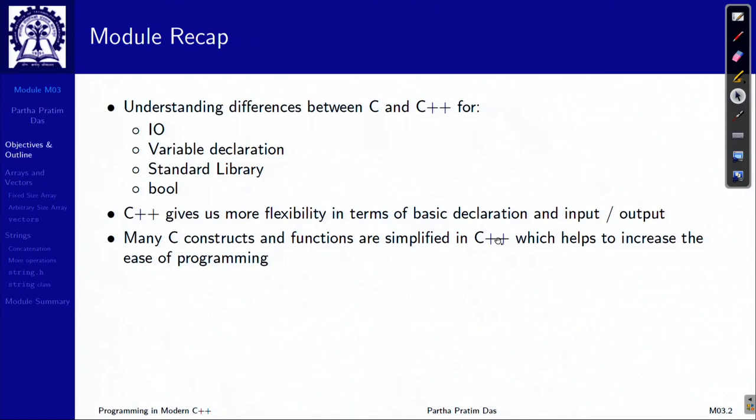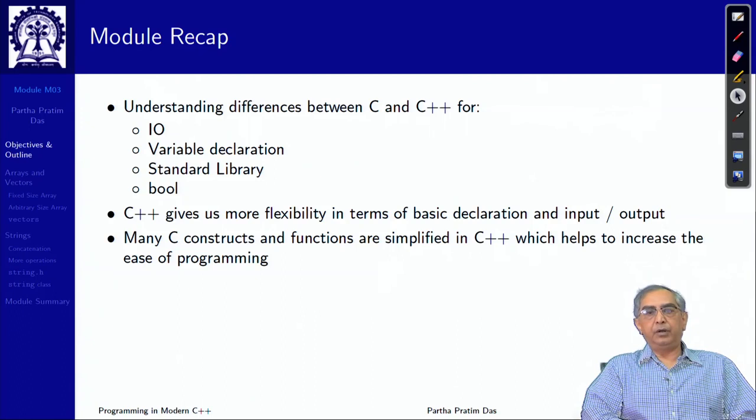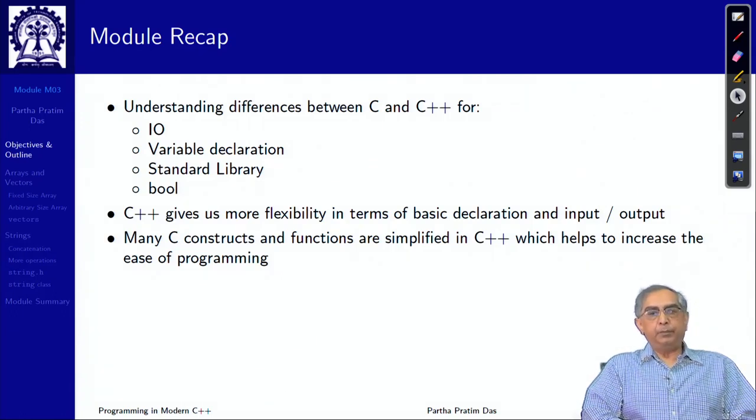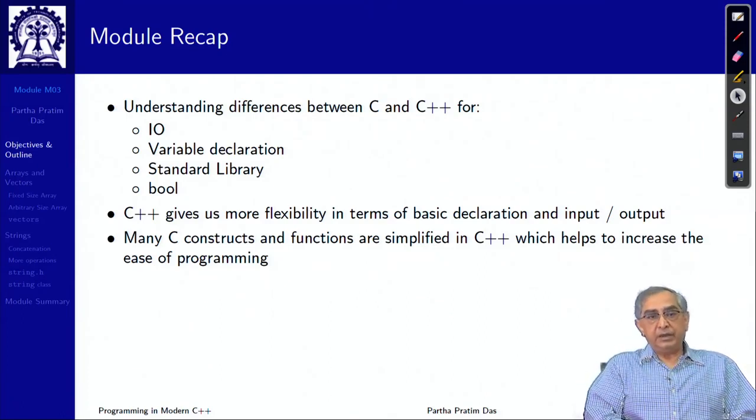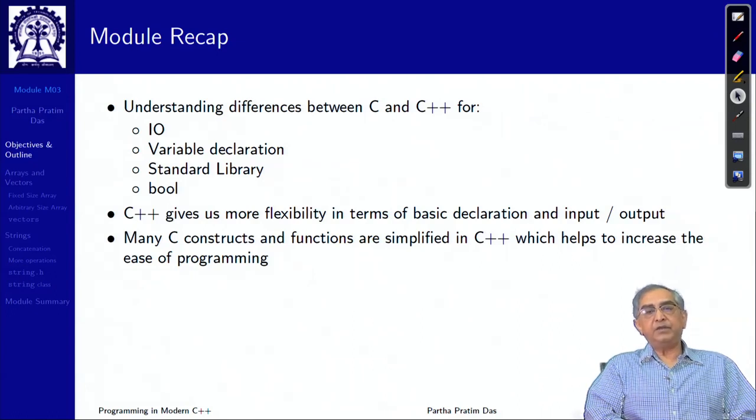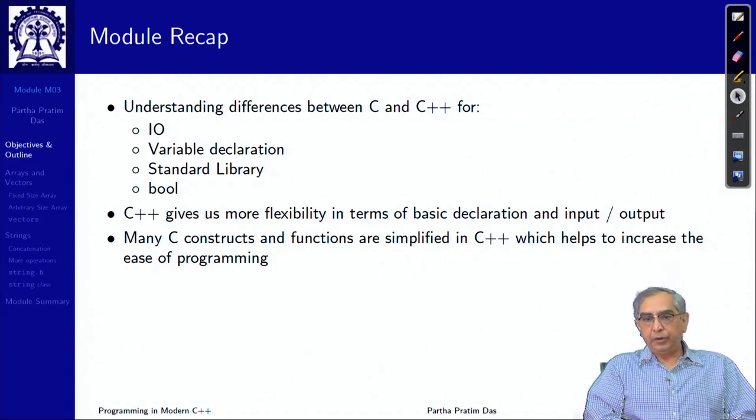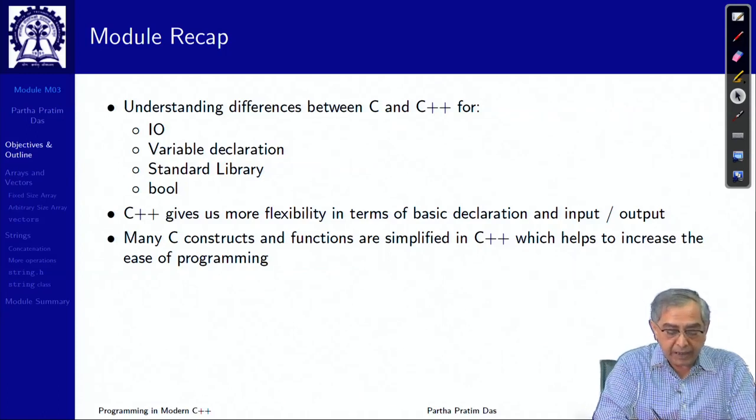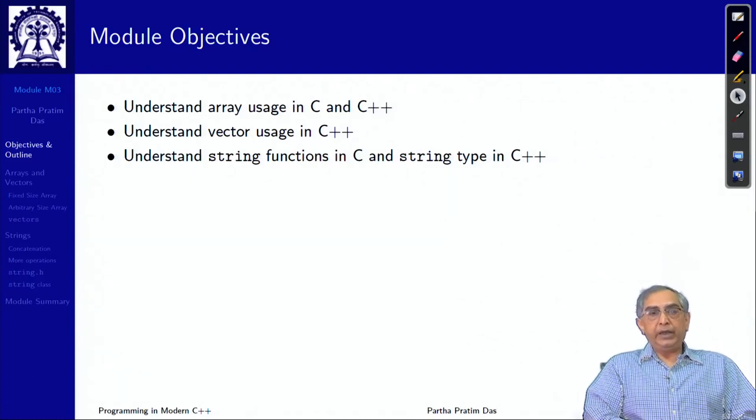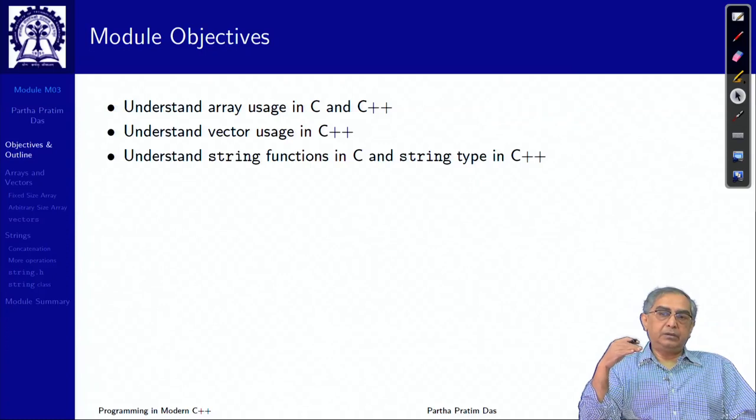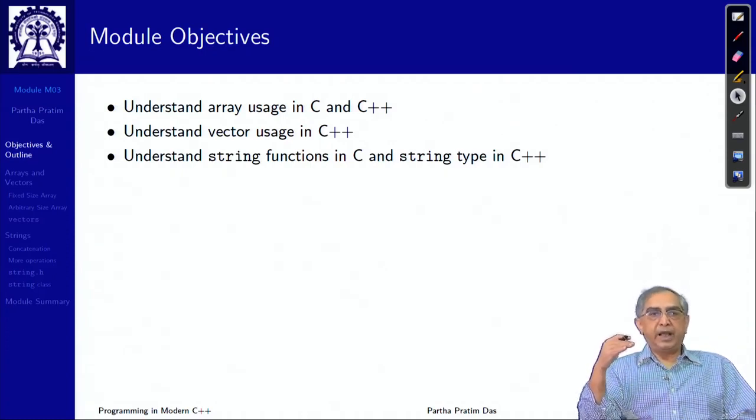Welcome to Programming in Modern C++. We are in week 1, module 3. In the last module, we started taking a look at how to write equivalent C++ programs for simple C programs. We took examples which involved IOs, variable declarations, standard library and bool, and observed that most of the times C++ gives us more flexibility.